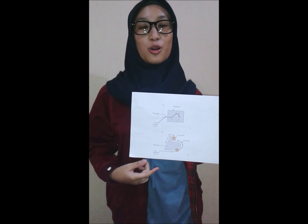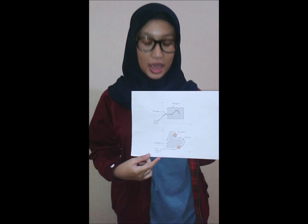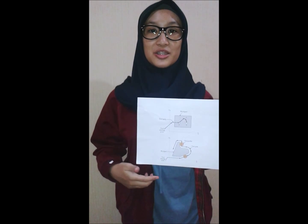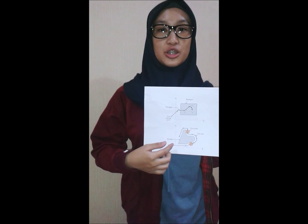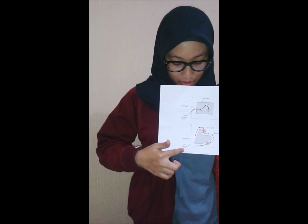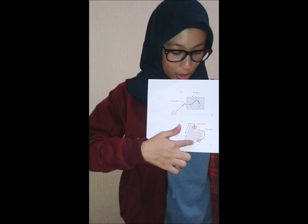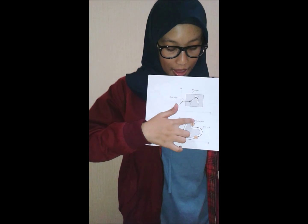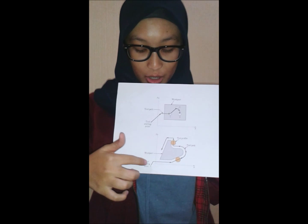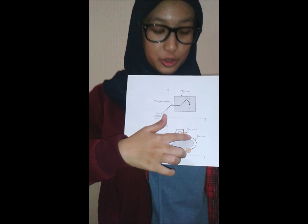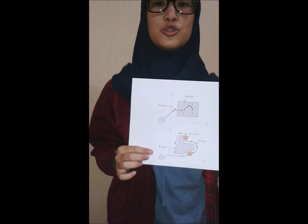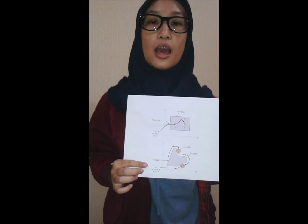The second system is the continuous path system, also called the contouring system. In the continuous path system, the tool performs an operation during movement. From the tool's starting point, the tool moves along the tool path and performs an operation continuously during that movement. Examples of the continuous path system include milling and turning operations.